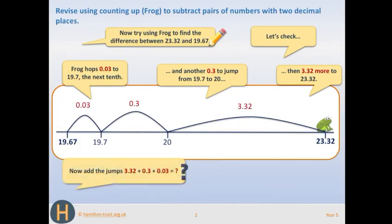Then the final step: add those jumps together. You've got 0.03, add 0.3, and that is 0.33. Then you're adding 3.32 to that, so that's 3.65. Good luck with today's work and I hope you enjoy this method.